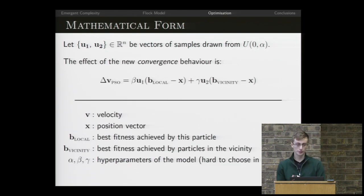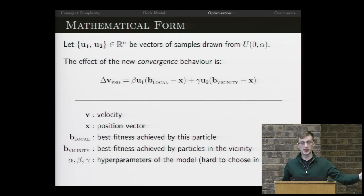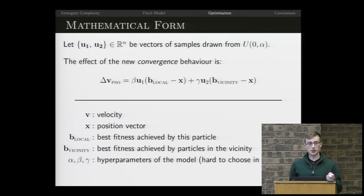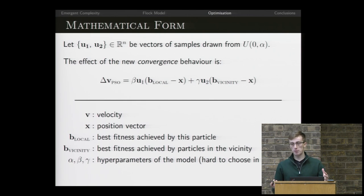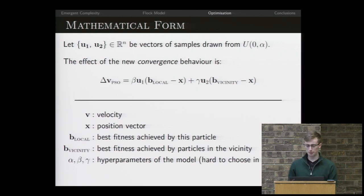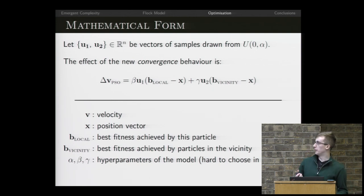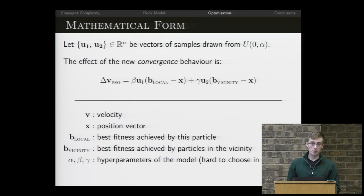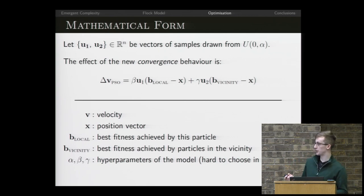We define our convergence behavior, which has two terms. Each bird now tracks, over time, what the best position it has ever found was. At each point it wants, to some extent, to move towards that best position. It also asks all the birds in its vicinity for their best positions, and contributes some factor towards moving towards that position as well. Parameters beta and gamma define how much we care about what I have found versus what my neighbors have found. These hyperparameters are really hard to pick in practice, and there's a lot of current academic research behind picking hyperparameters for meta-heuristic models.